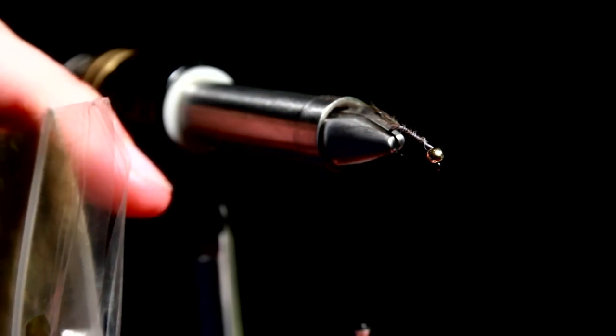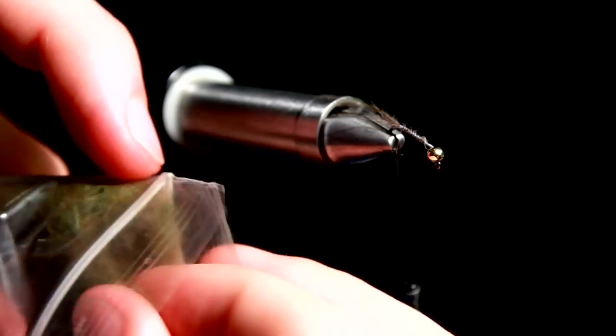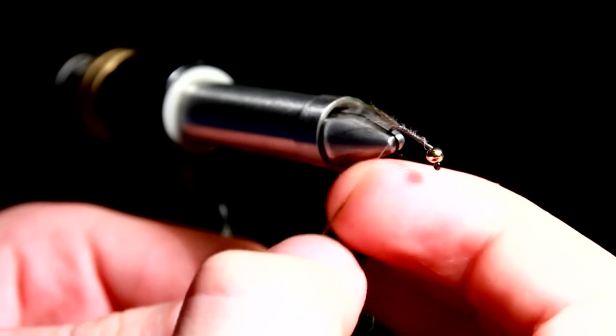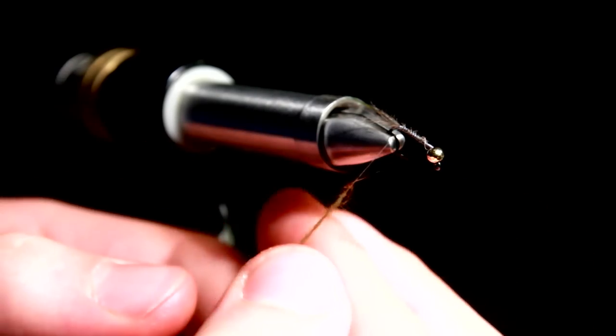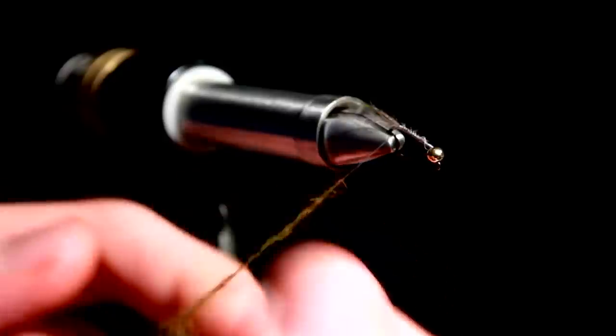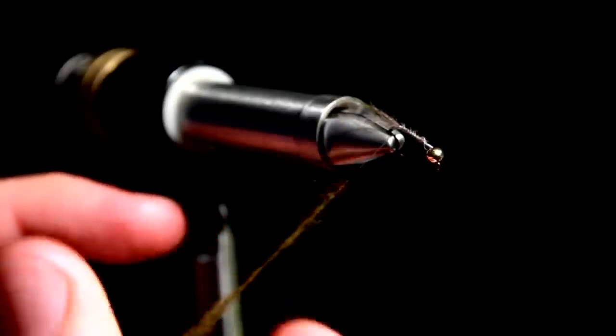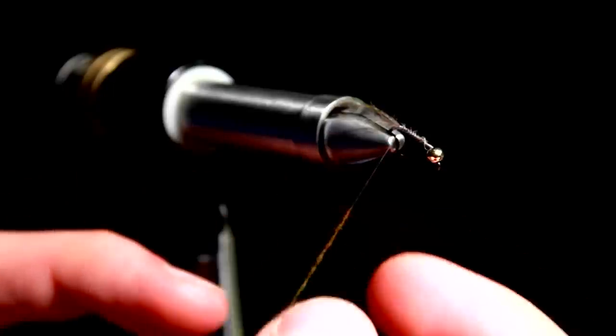Then we put our dubbing on. You don't want that much dubbing. I suggest you make this fly as slim as possible. Though you do wish to give it a taper. I tie this fly to imitate large dark olives and similar mayflies.